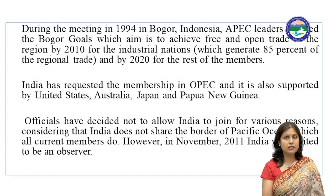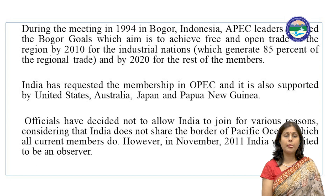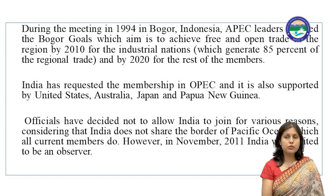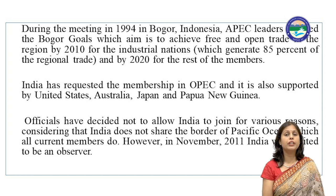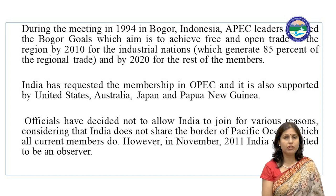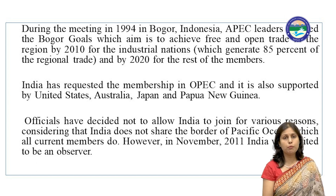The Bogor Goals aimed to achieve free and open trade by 2020 for the rest of the members. India has requested membership in APEC and is supported by the United States, Australia, Japan, and Papua New Guinea. However, officials have decided not to allow India to join for various reasons, considering that India does not share a border with the Pacific Ocean, which all current members do. In November 2011, India was invited to be an observer.